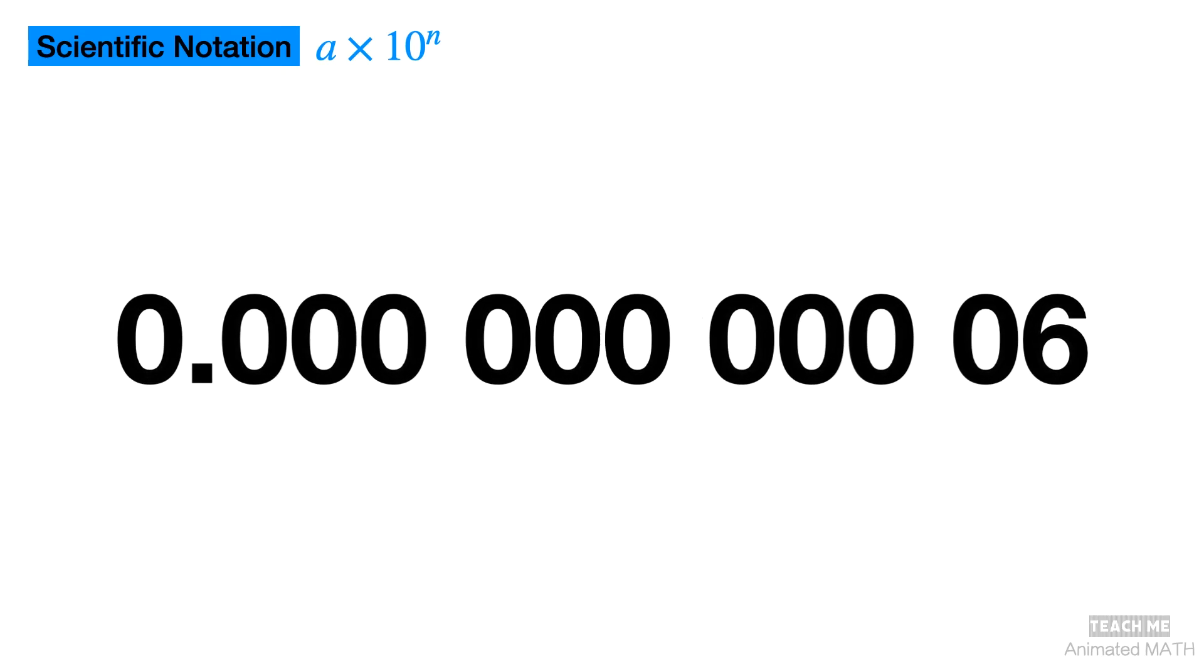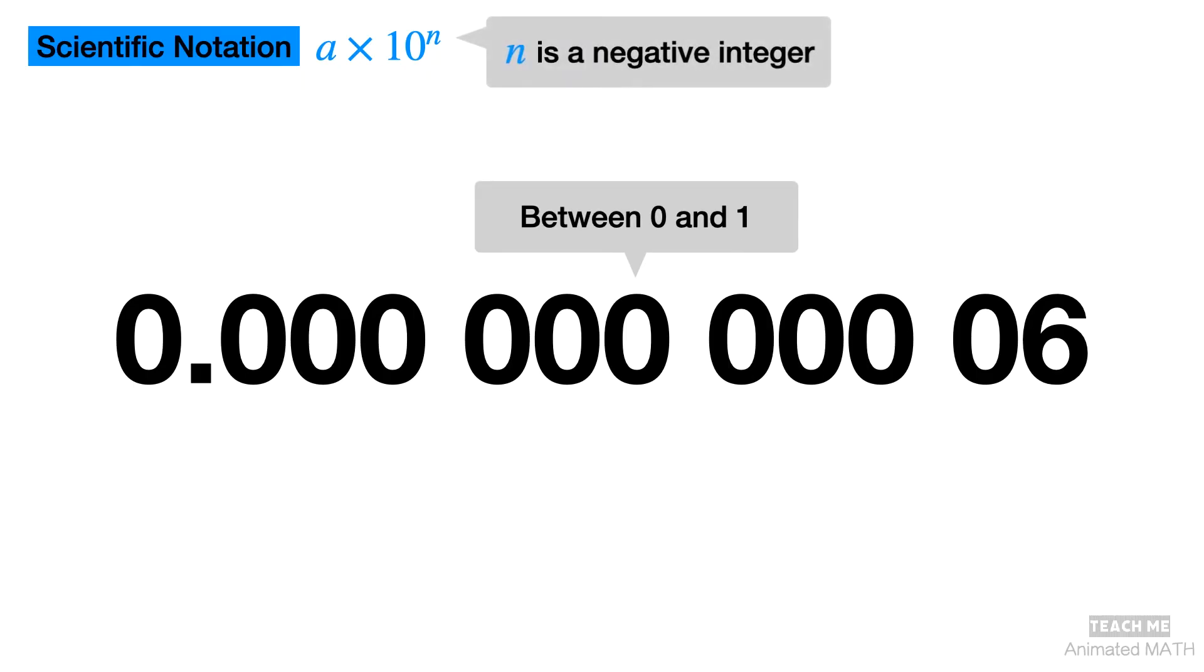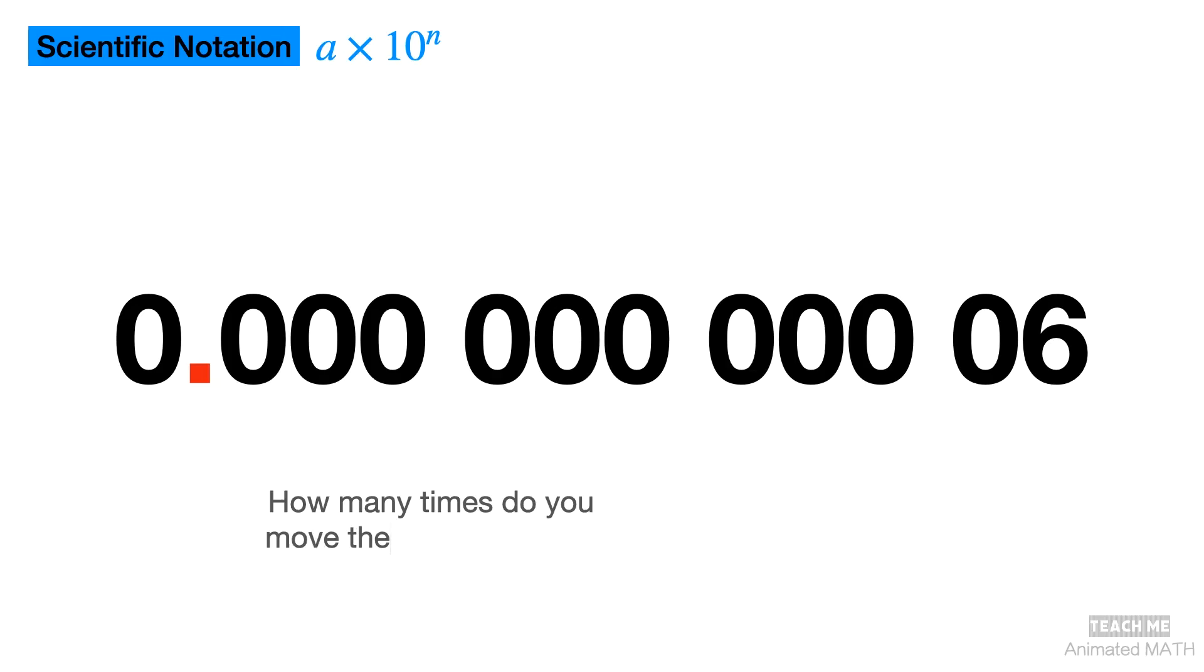Since the number is between 0 and 1, we'll be using a negative exponent for base 10. This means n is a negative integer. To figure out the value of n, think: How many places do I move the decimal point? This time, we have to move the decimal point to the right.